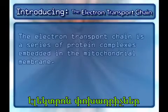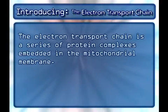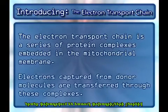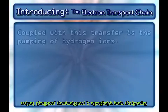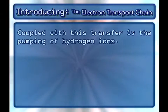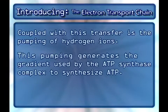The electron transport chain is a series of protein complexes embedded in the mitochondrial membrane. Electrons captured from donor molecules are transferred through these complexes. Coupled with this transfer is the pumping of hydrogen ions, which generates the gradient used by the ATP synthase complex to synthesize ATP.